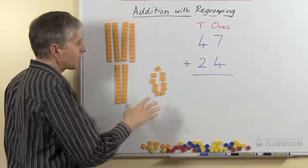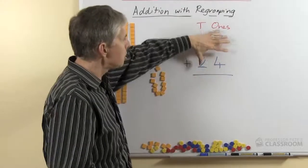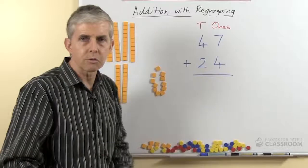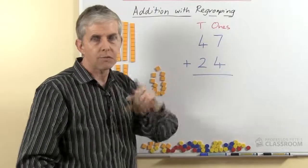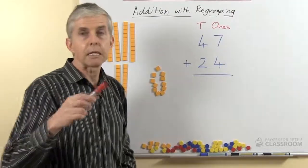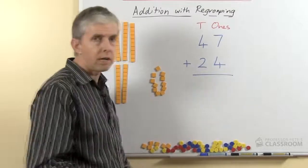Now if you're using base 10 blocks, I don't want you to count the blocks. It's important that you can do this without counting on your fingers or counting blocks or counters or something like that, but you think about your number fact. So 7 plus 4 is how much? You probably know 7 plus 3 is equal to 10, so 7 plus 4 is 11.